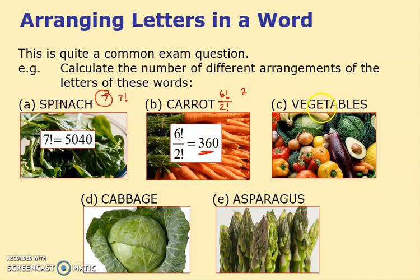Next word is VEGETABLES. How many letters have we got? One, two, three, four, five, six, seven, eight, nine, ten. Ten initially, so that's 10! obviously. Ah, there's some letters which are repeated. I've got an E three times.